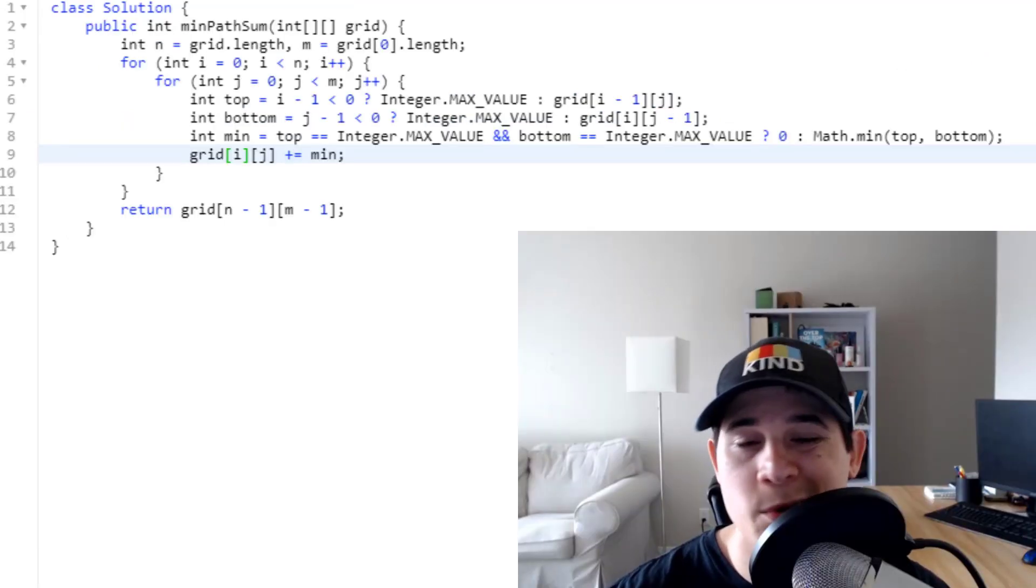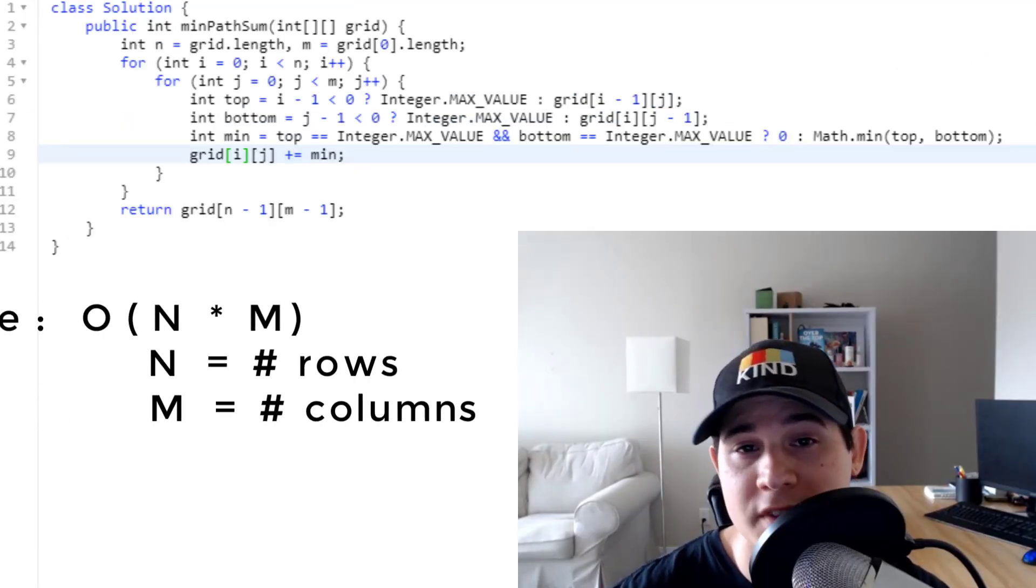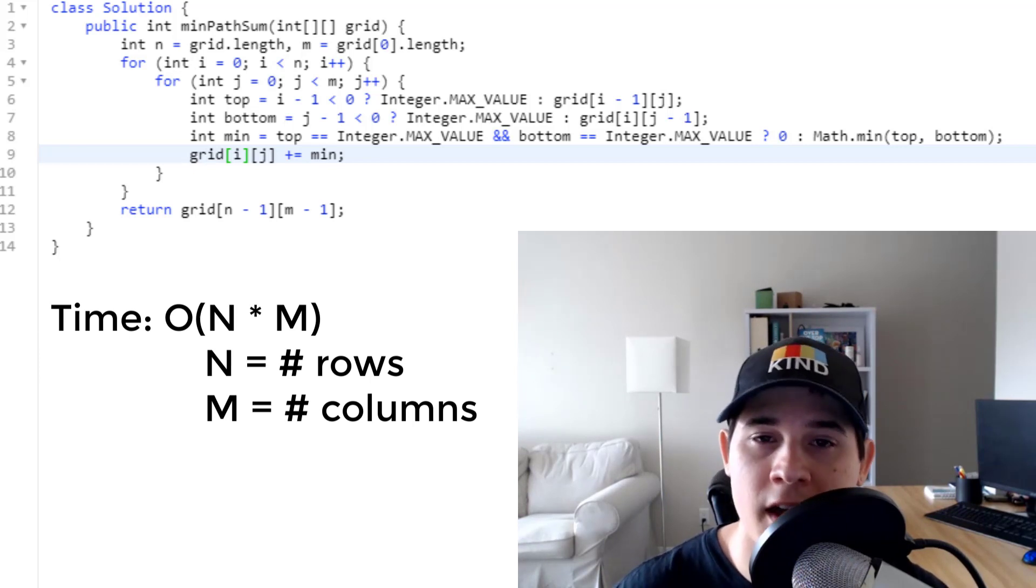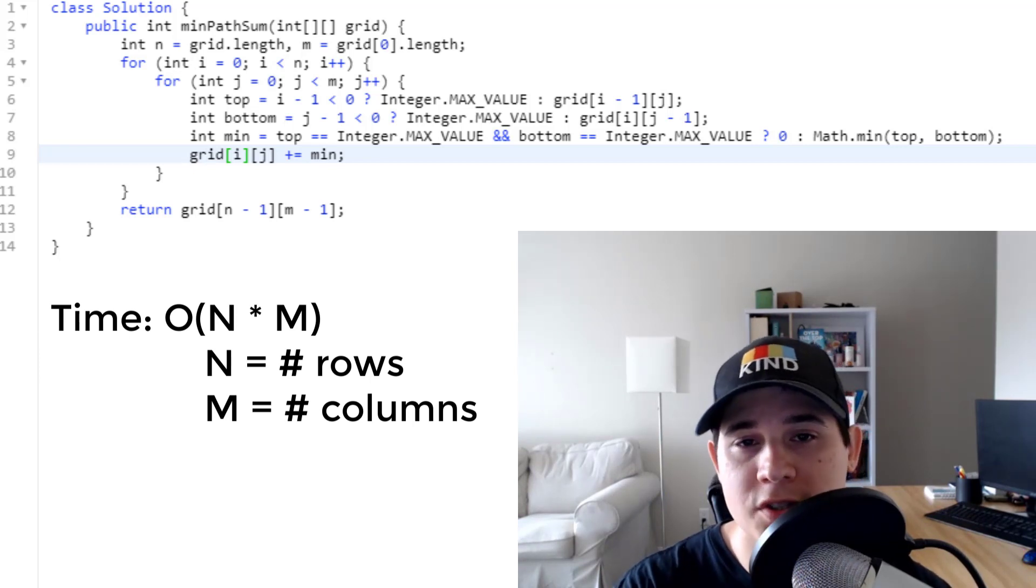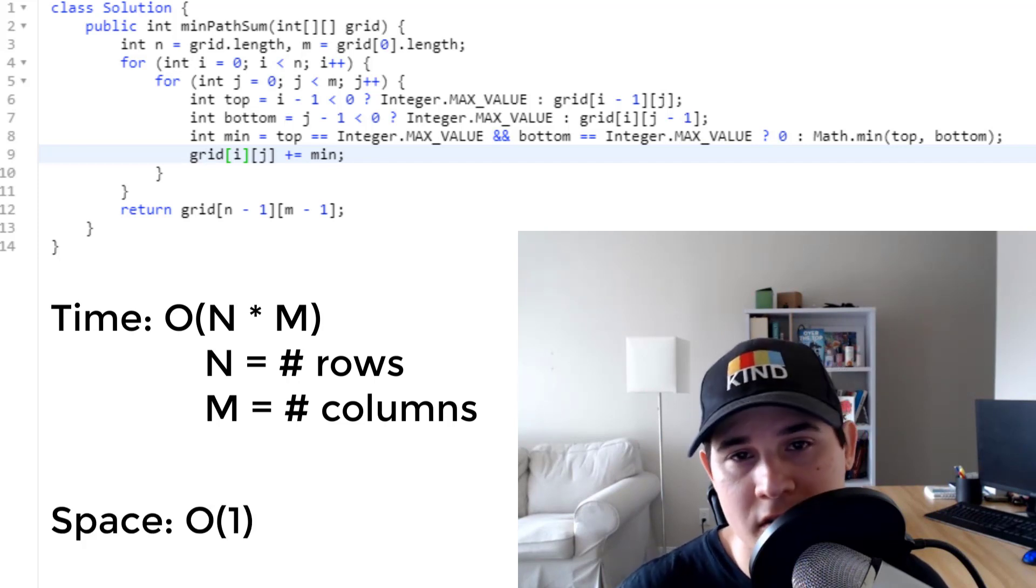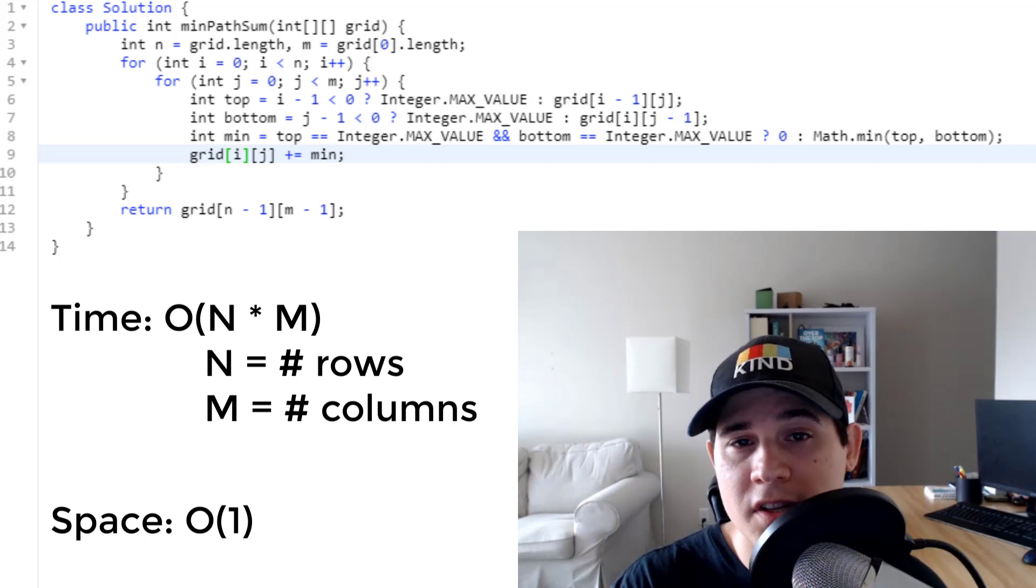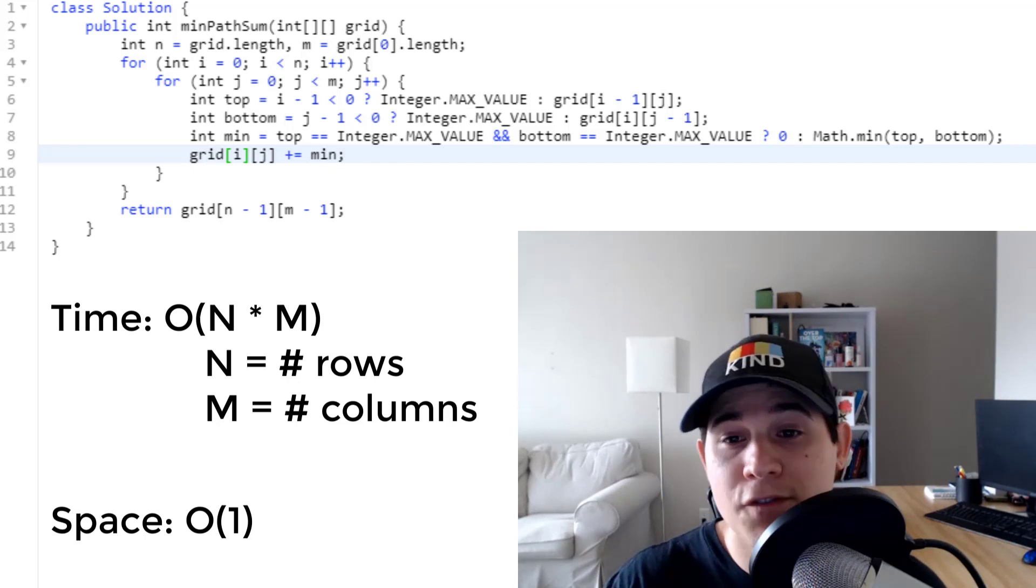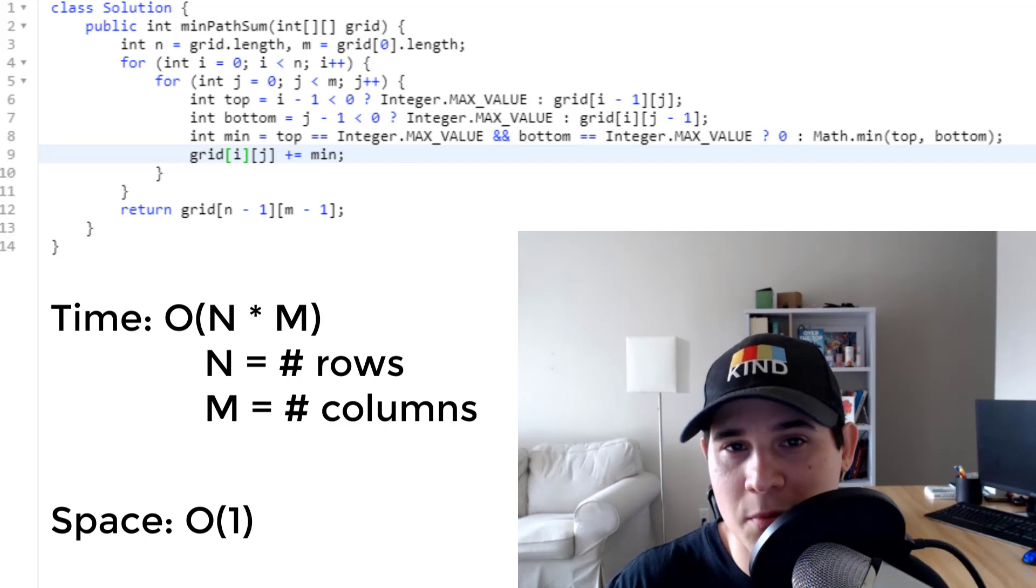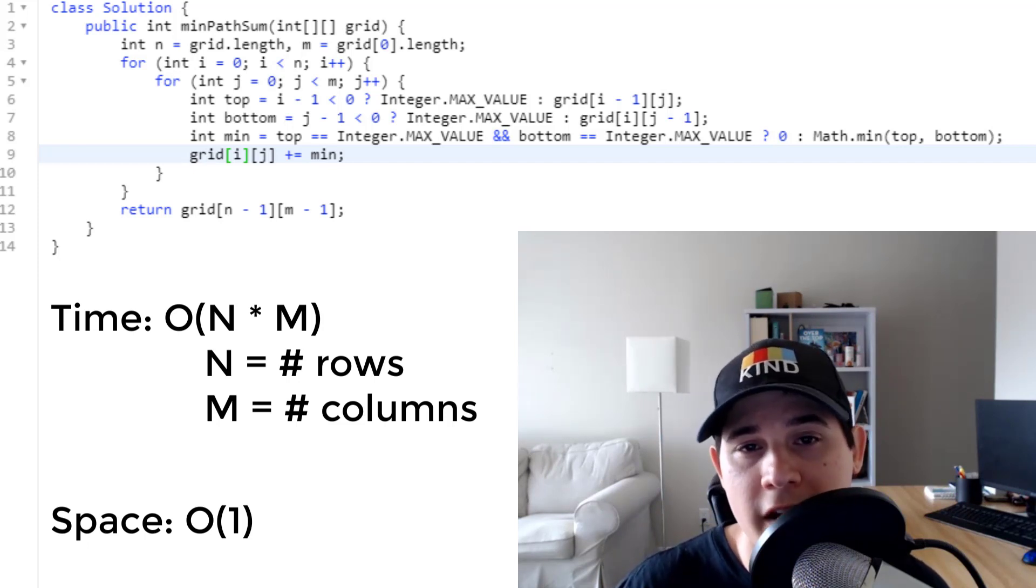And there we go. So our time complexity is going to be big O of n times m, where n is the number of rows we have, and m is the number of columns we have. We touch every element in our grid a single time as we are computing the minimum path sum of every cell. And then as for our space complexity, it's actually constant because we are using our input to keep track of the previous elements that we've computed. And this is definitely something you would want to clarify with your interviewer if you are allowed to modify your input, because if you start modifying your input and then later on down the line, they say, oh, you can't do that. Well, now you just wasted a bunch of time, but it does get our space complexity down to be constant.